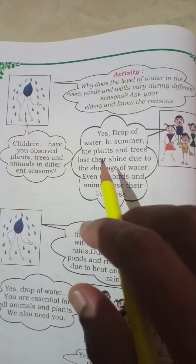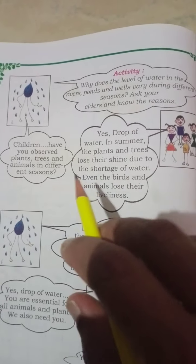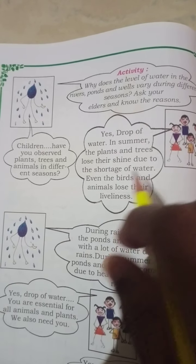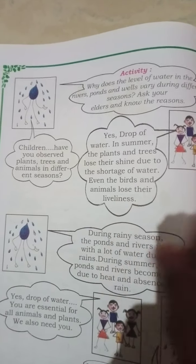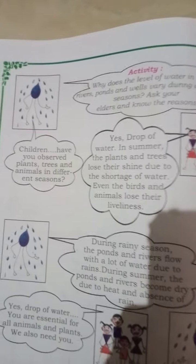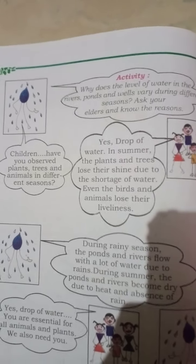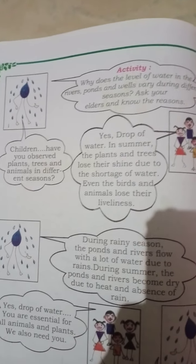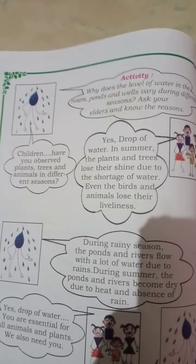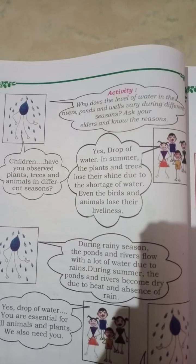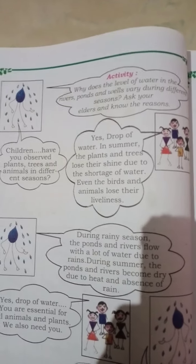Yes, drop of water. In summer, the plants and trees lose their shine due to the shortage of water. Even the birds and animals lose their liveliness. The plants and leaves dry up in summer season because of shortage of water.